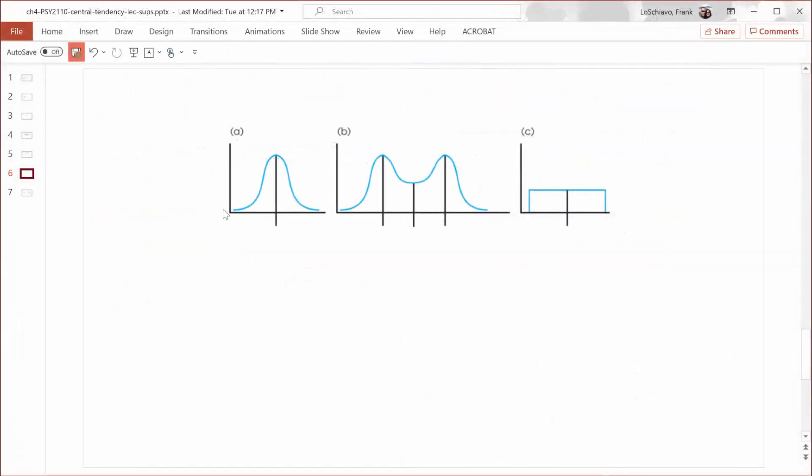Let's first talk about symmetrical distributions. Each one of these distributions is symmetrical. If you were to cut it right down the middle, the left side would be a mirror image of the right side. We'll first talk about this normal distribution. On a normal distribution, the mean, the median, and the mode all pile up right in the middle.